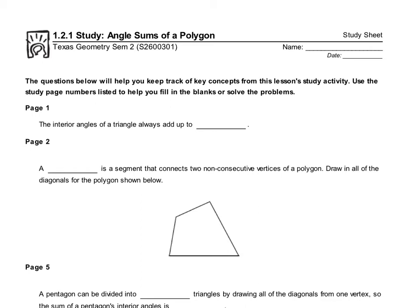We're beginning our discussion about the angle sums of polygons. Each polygon, depending on how many sides it has, the angles will always add up to a specific number. The interior angles of a triangle, you should know this, always add up to 180 degrees.